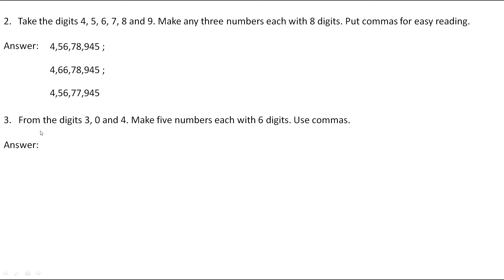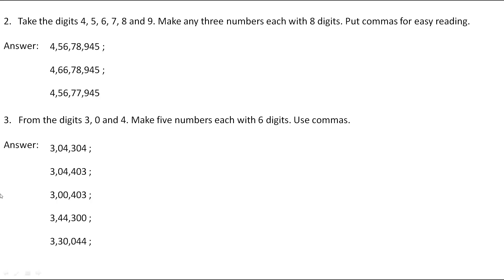Let's see the next question. From the digits 3, 0 and 4, make 5 numbers each with 6 digits. They have given only 3 digits and we have to make 6-digit numbers. So we can use each digit twice, or use any digit 4 times with the remaining 2 digits. I used each digit twice to make 6-digit numbers. The numbers I tried are: 3,43,004; then 3,44,030; then 3,40,304; then 3,44,300; and then 3,30,044. You can make your own numbers also.